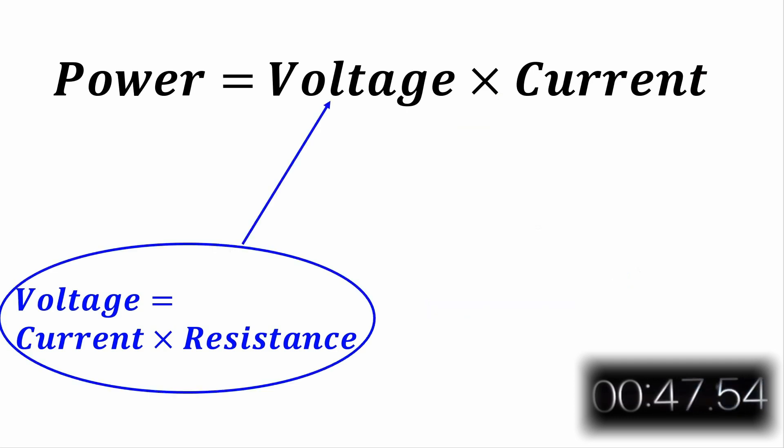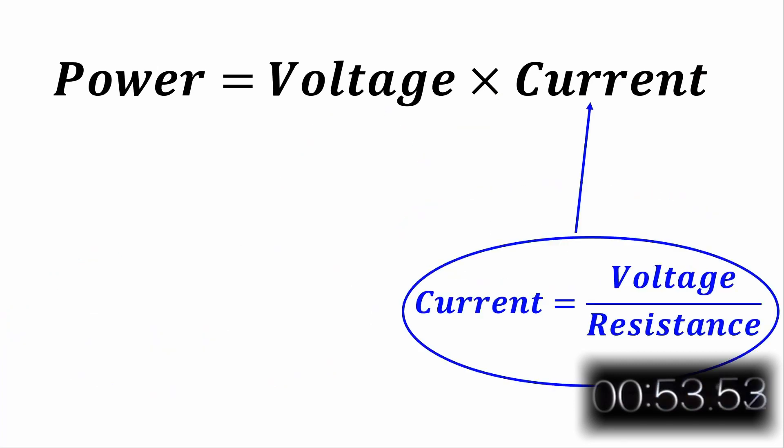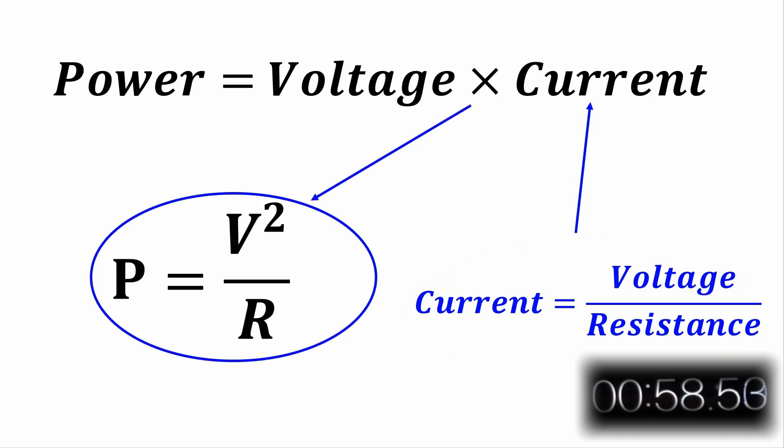Since voltage equals current times resistance, you can substitute IR in for V and get power is equal to I squared R. Similarly, since current is equal to voltage over resistance, you can substitute V over R for I into the P equals VI equation, and get P equals V squared over R.